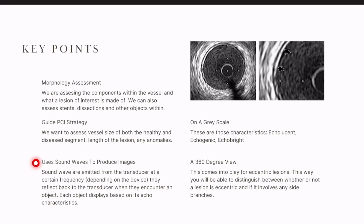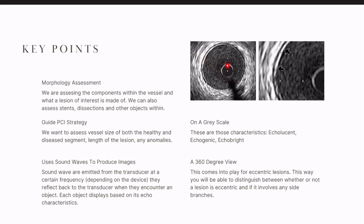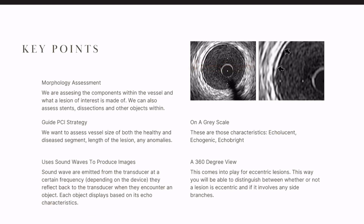How does it get its image? It uses sound waves to produce the images. The sound waves are emitted from the transducer. When you are evaluating images, you are taking it from the perspective of you being the transducer. You're sending out a signal and sound wave, and then you're waiting for that sound wave to come back. How quickly or slowly that comes back — or if it doesn't come back at all — tells you what's in front of it. Each object displayed is based on its echo characteristics, which is why you see different coloration.